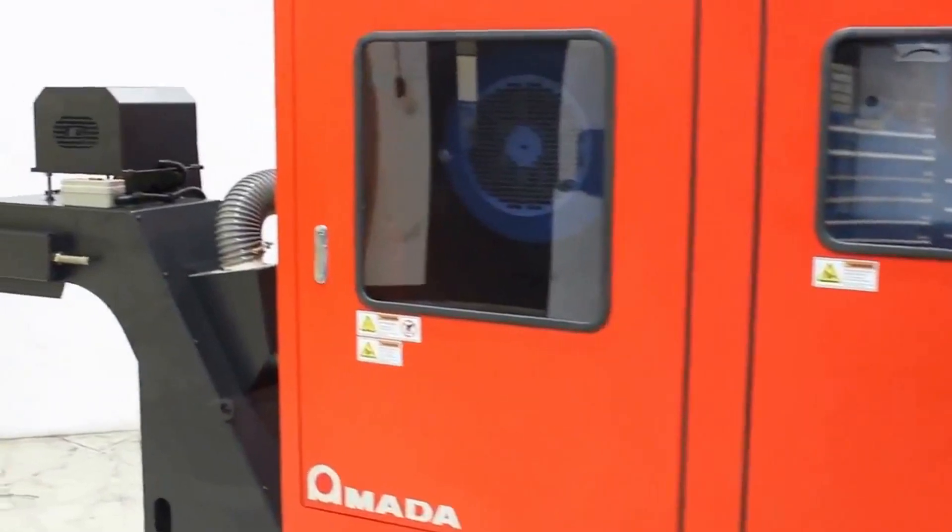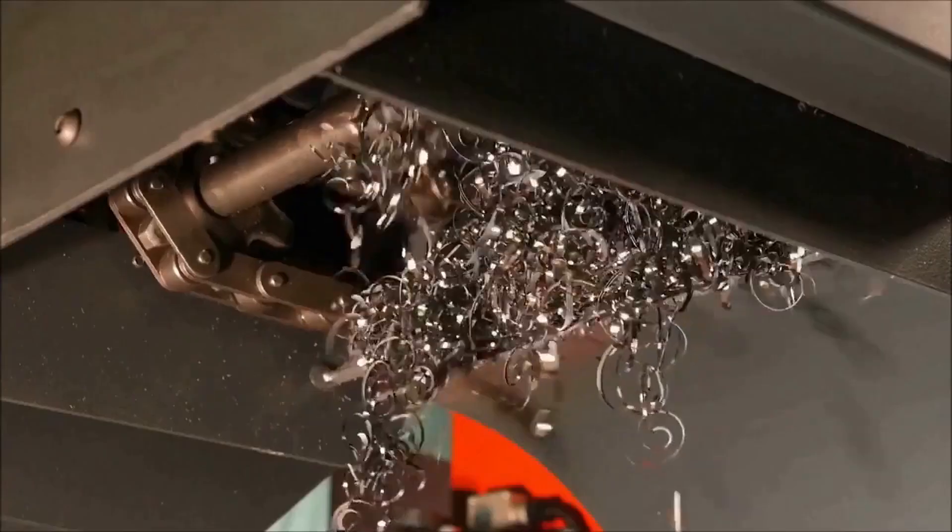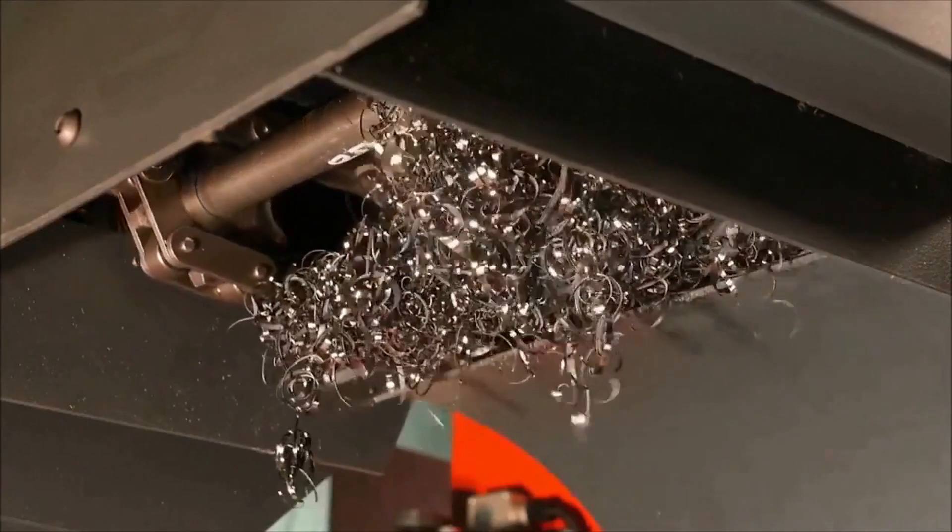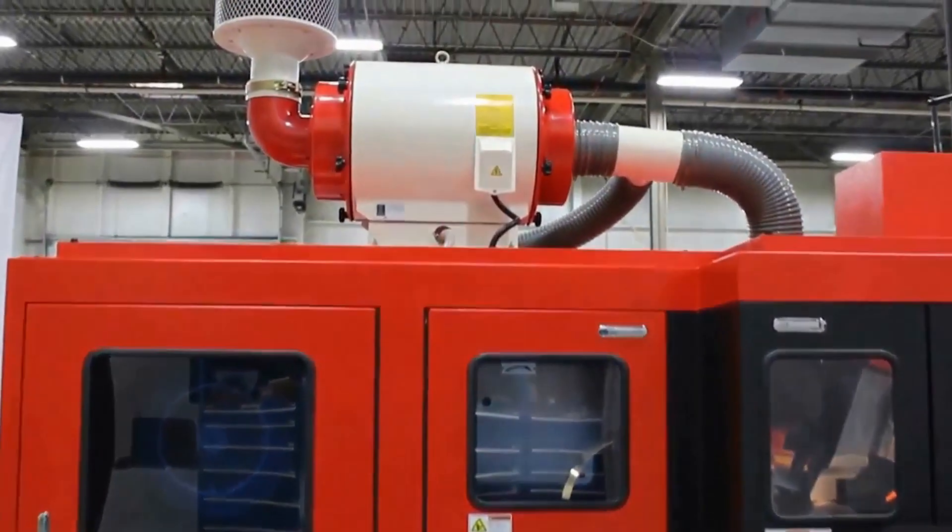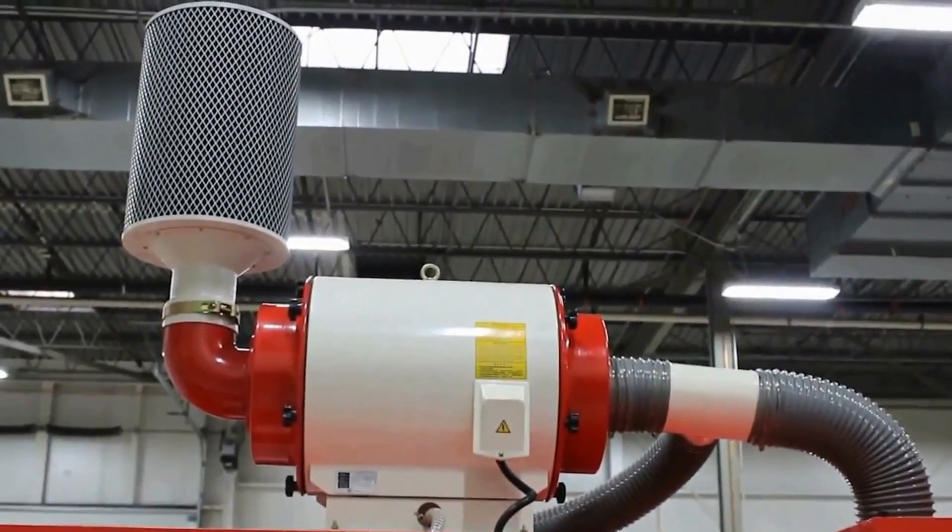The chip conveyor automatically pulls the chips out of the machine to maximize machine uptime by eliminating the need to stop the machine to remove chips. A mist collection system removes oil mist to keep the air free of pollution and the work area free of contamination.